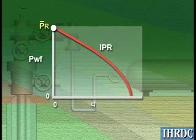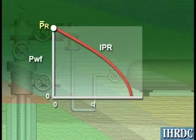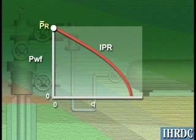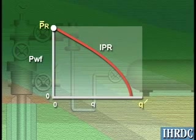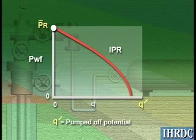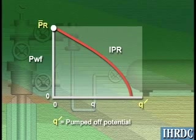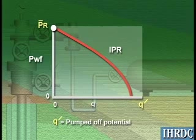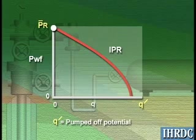The endpoints of the IPR curve are the average reservoir pressure at a flow rate of zero, and the maximum potential flow rate, Q prime, at a bottom hole flowing pressure of zero. Q prime, called the pumped off potential, or open flow potential of the well, represents the ideal maximum flow rate that would occur if we could reduce the bottom hole pressure to zero.